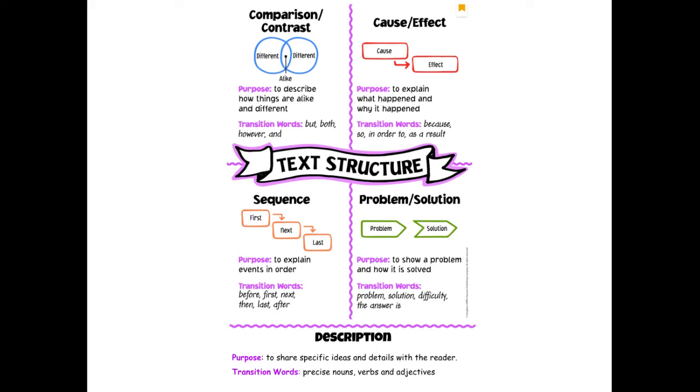The last text structure on here is description. The purpose of description is to share specific ideas and details with the reader. The language that you may see that gives clues to a description text structure are going to be precise nouns, verbs, and adjectives to show the reader the topic.